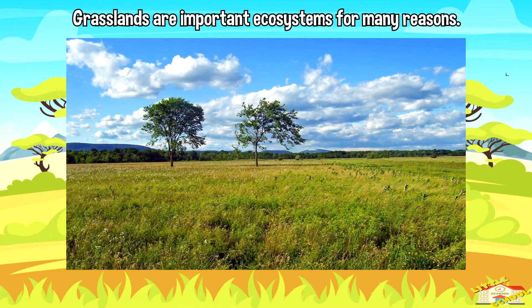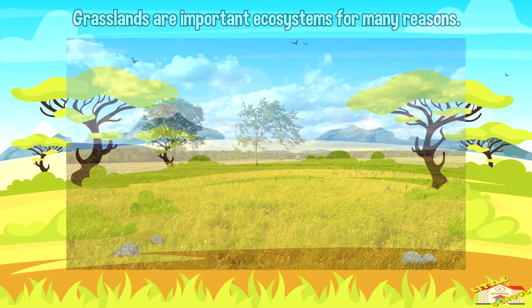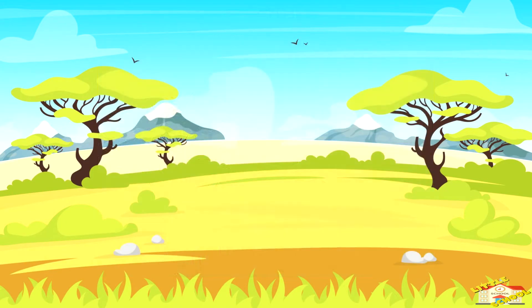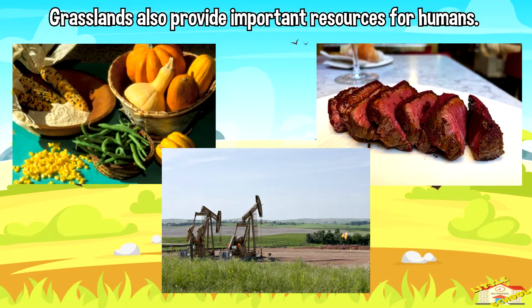Grasslands are important ecosystems for many reasons. They provide habitat for many species of plants and animals. Grasslands also provide important resources for humans, including food and fuel.